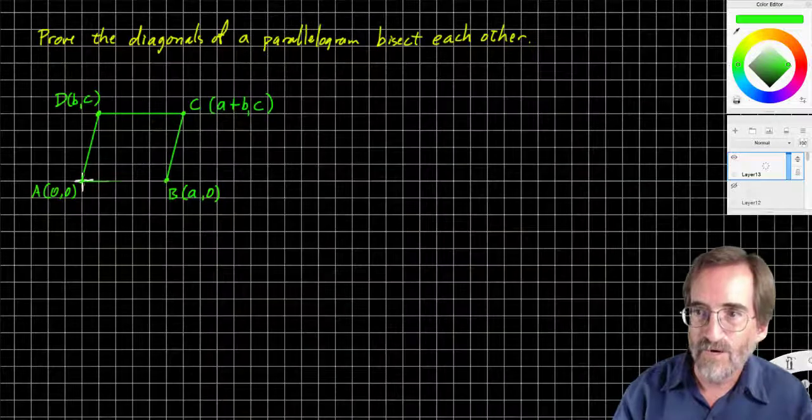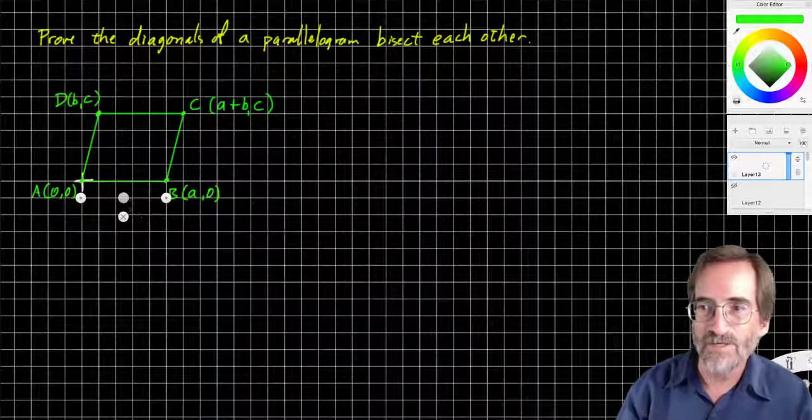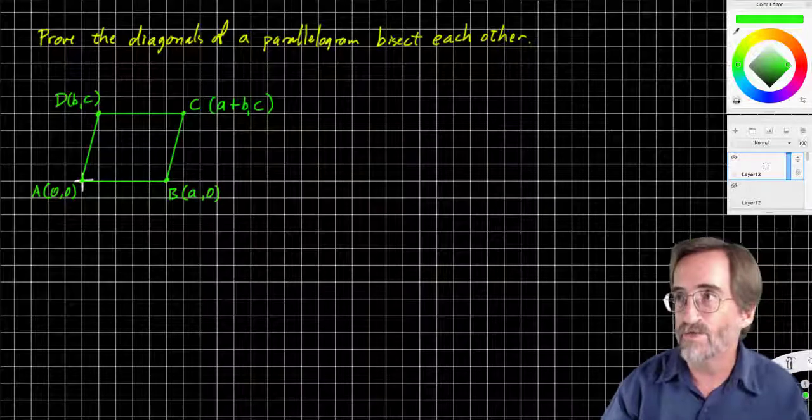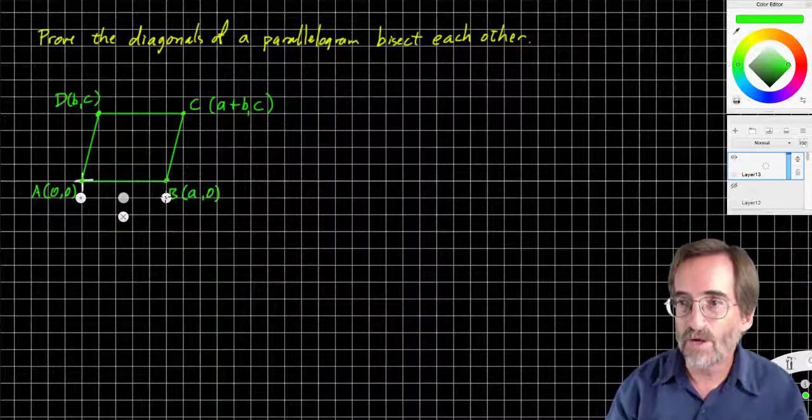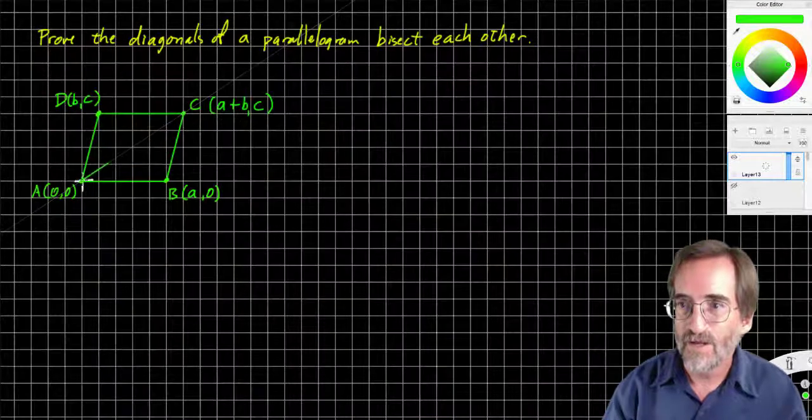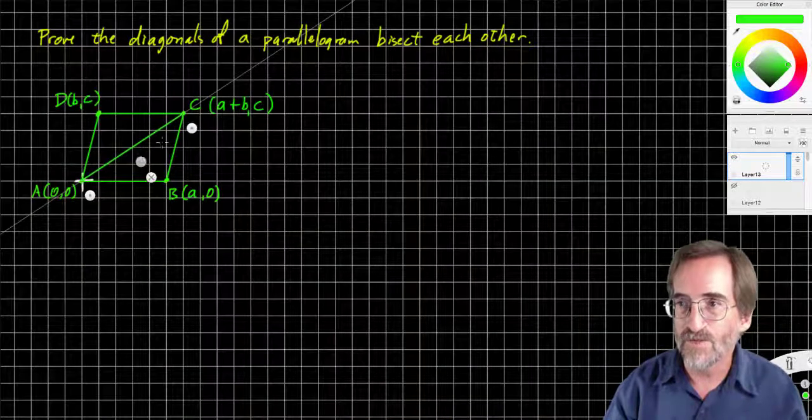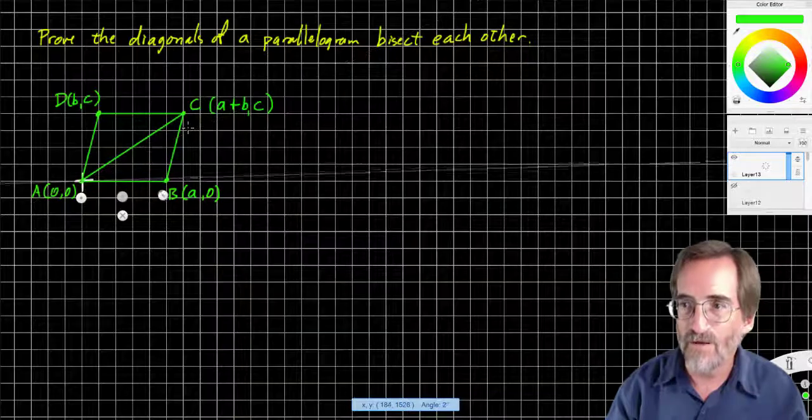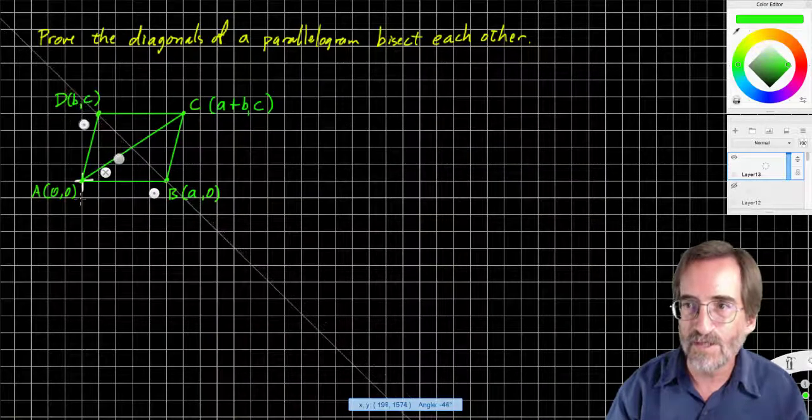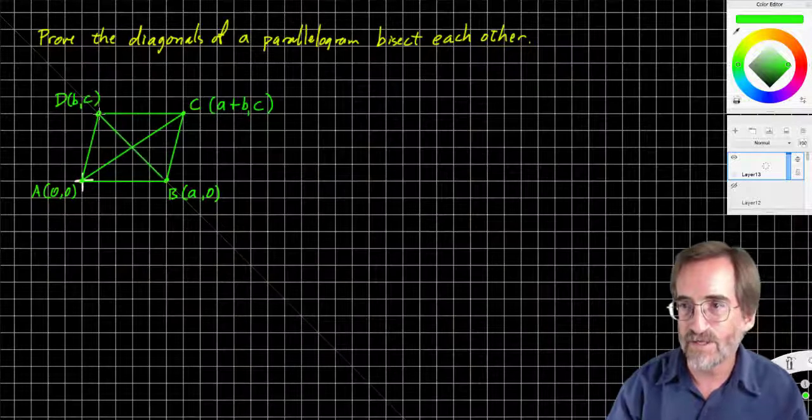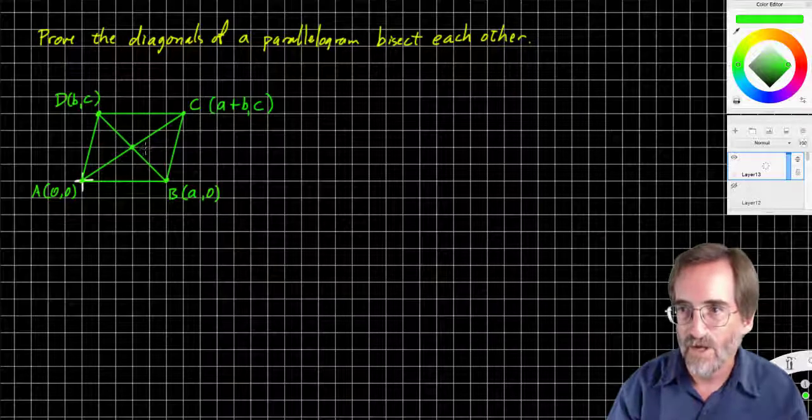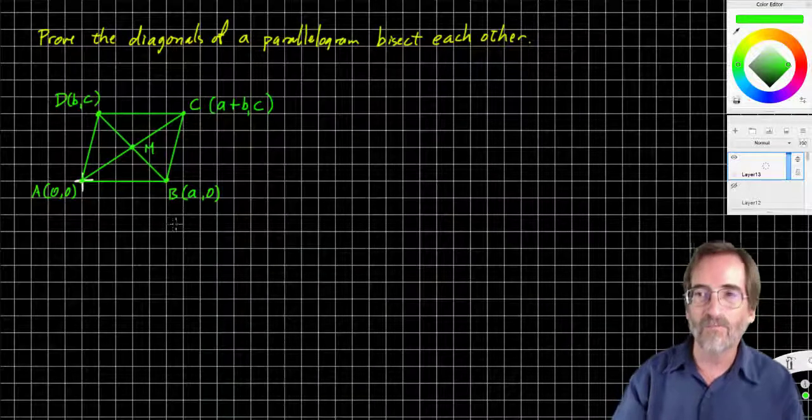And our proof is going to be that the diagonals of a parallelogram. So this is a parallelogram and it represents all parallelograms. We're going to prove the diagonals of a parallelogram bisect each other. Now bisect, bisect by two, sect cut, cut in half. It has to do with having a common midpoint. And so I'm going to find the midpoints of the diagonals. You can imagine we're going to use the midpoint formula to do that.